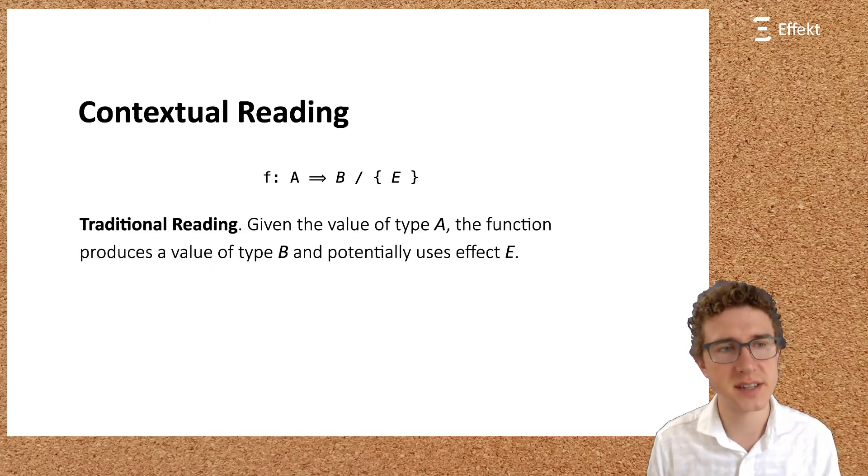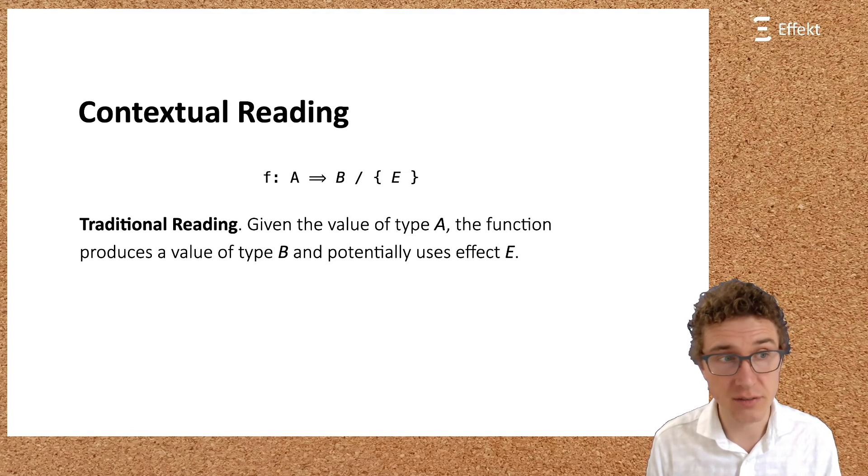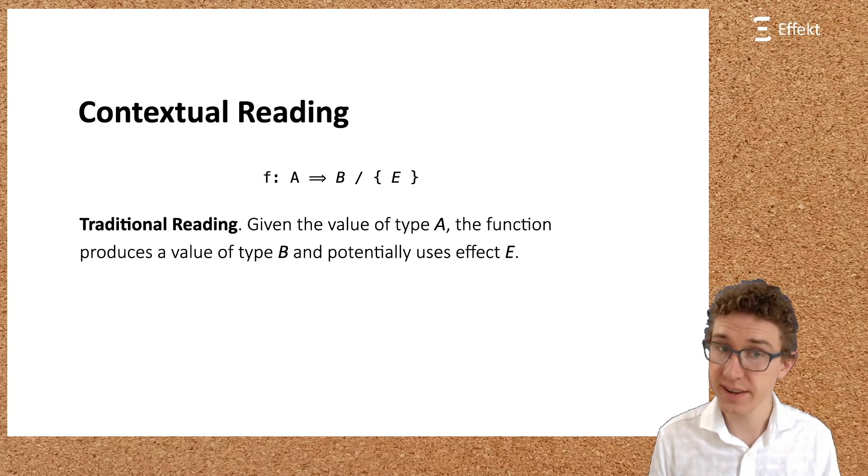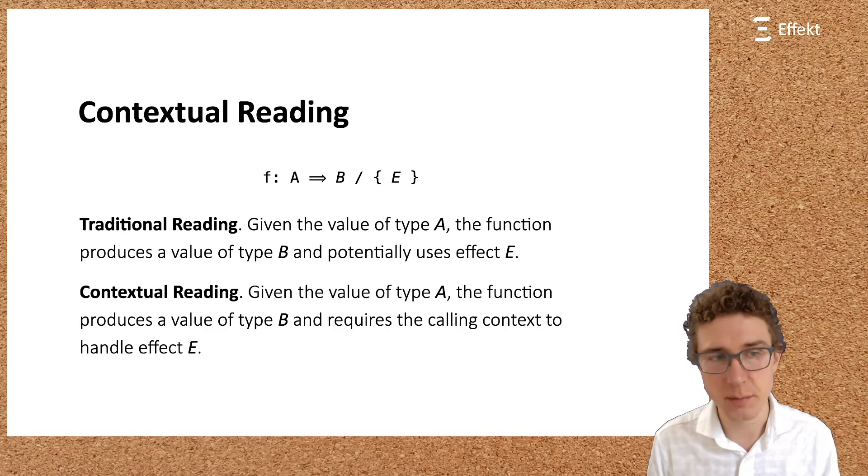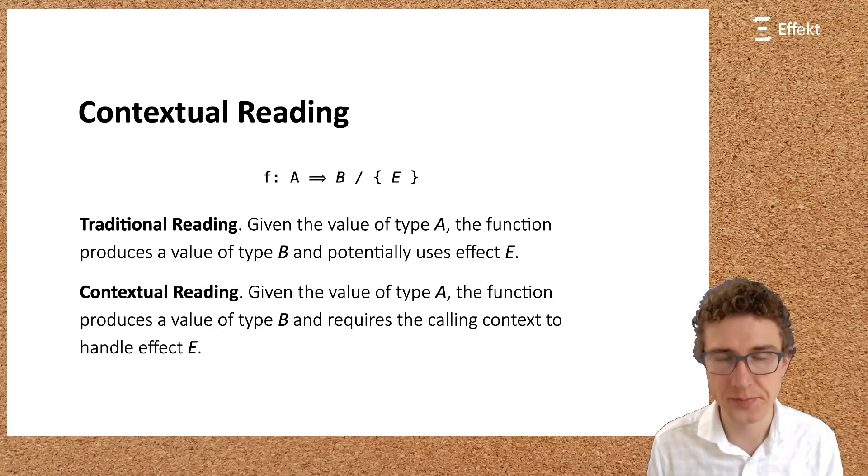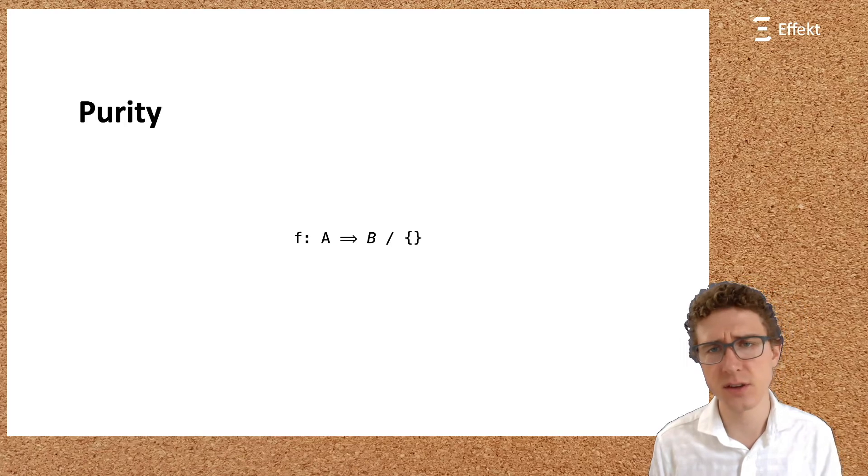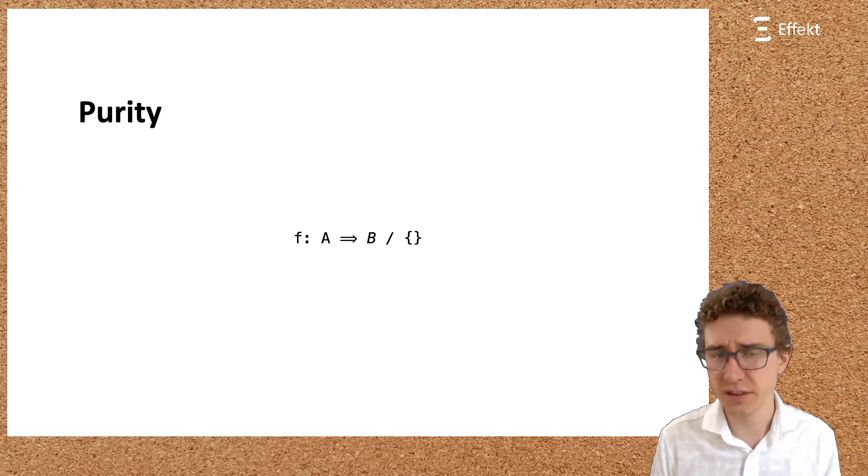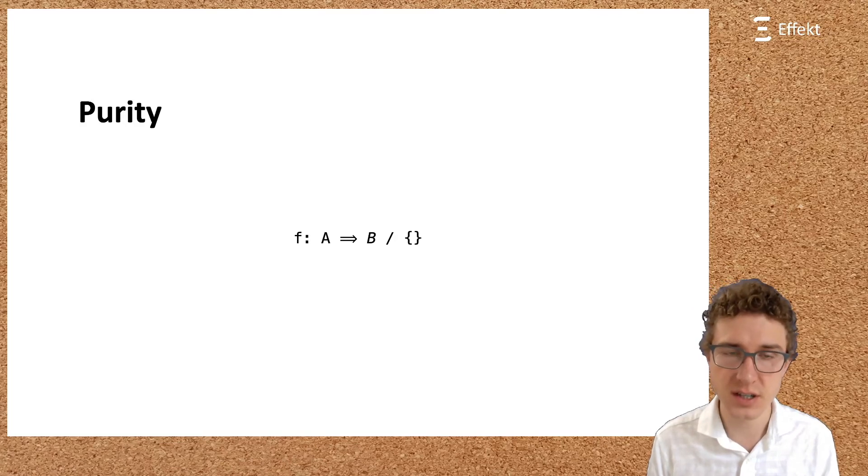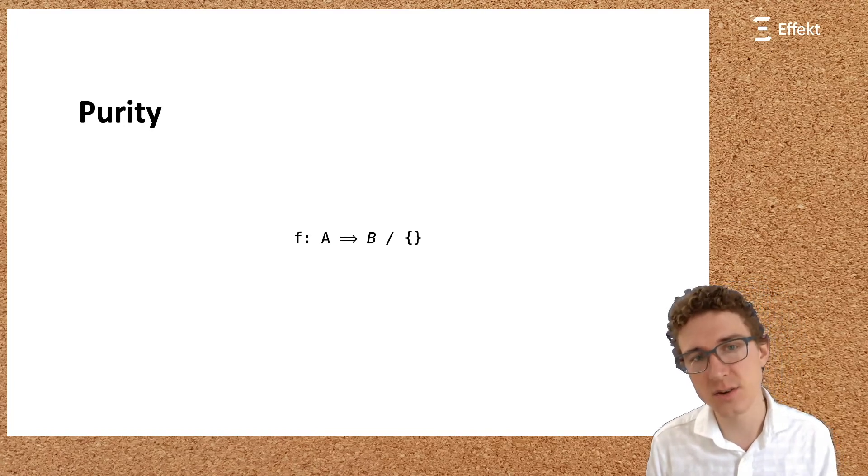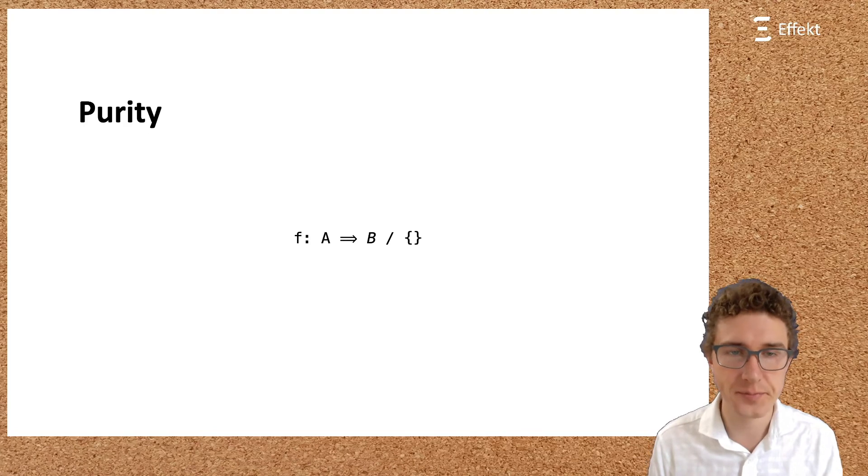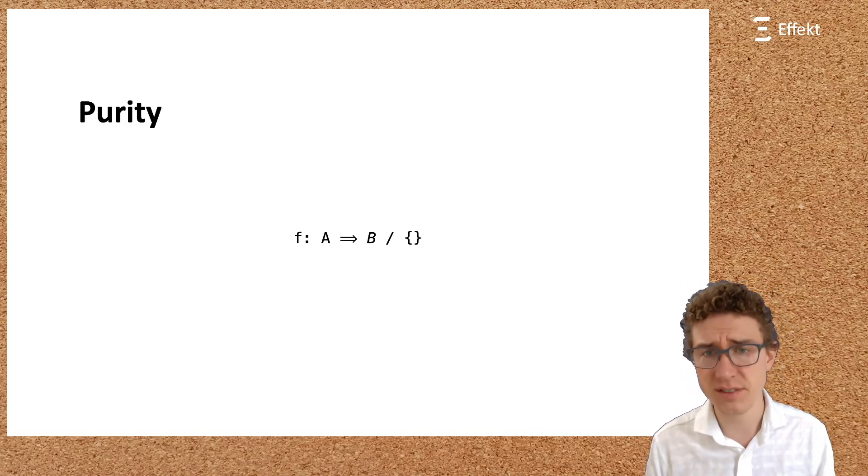Our design decisions result in a different reading of type signatures. Traditionally, one would read the above signature as given the value of type a, the function produces a value of type b and potentially uses effect e. While in the effect language we read it as given a value of type a, the function produces a value of type b and requires the calling context to handle effect e. This different reading also has an effect on the notion of purity. While in traditional effect systems one would understand f to be a pure function, in the effect language f simply admits no direct observation of effects to its caller, but can use arbitrary effects that are handled at its definition side. Only in the special case of top-level functions, we can conclude that a function with an empty effect set is actually pure.